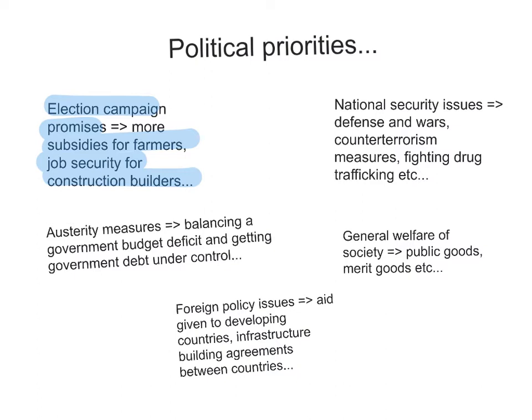National security issues like spending on defence and wars, counter-terrorism measures, and fighting drug trafficking — the national security priorities of the government are also part of its political priorities.